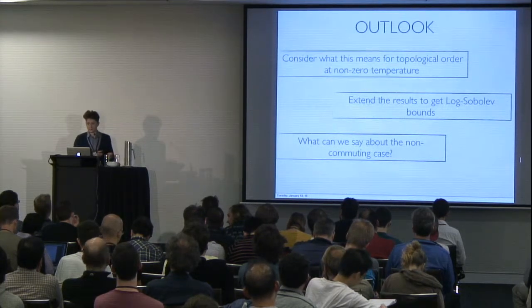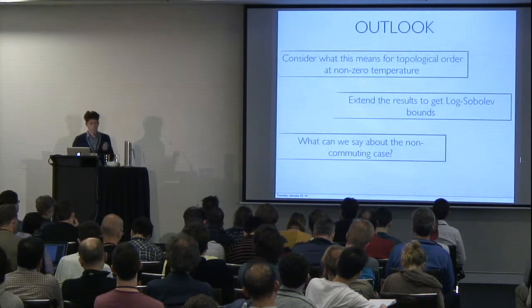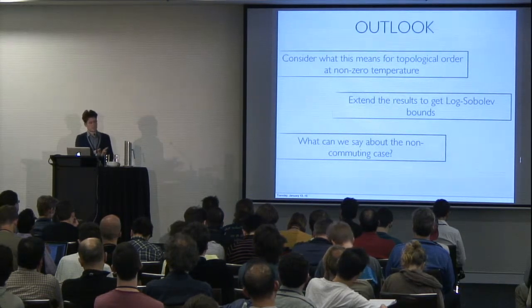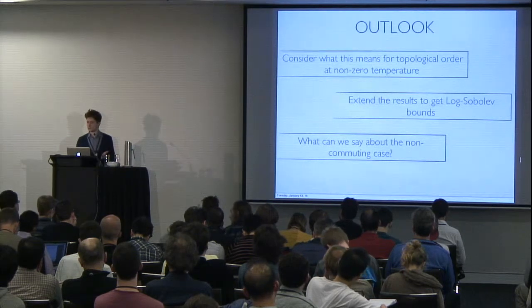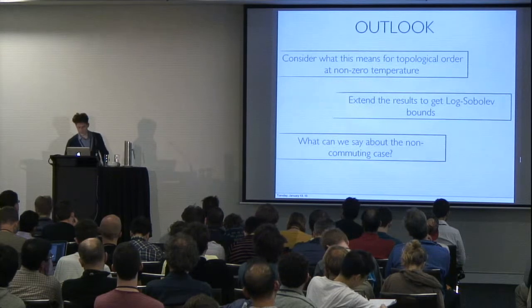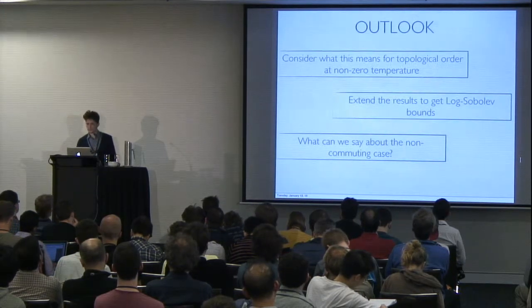we don't even know how to write one down that will take you to the Gibbs state. There is a result called the quantum metropolis algorithm, which is an algorithm on a quantum computer which takes you to an arbitrary Gibbs state. But this is a completely non-local algorithm. So, to do this in a local manner is a very big open problem, I think, and one which I encourage people to work on.